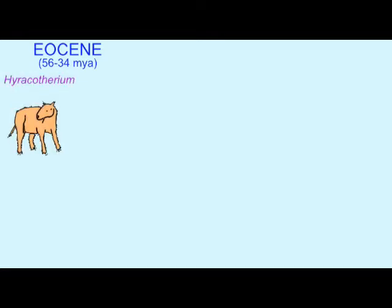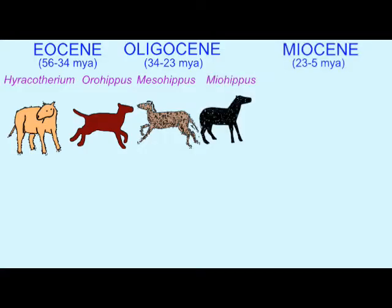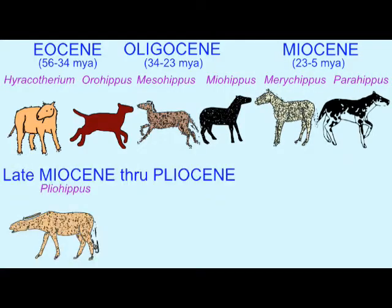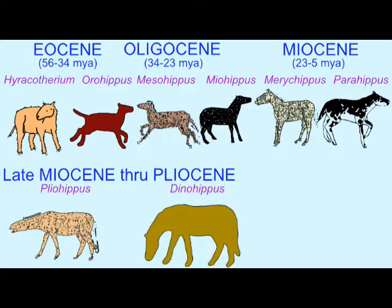There are different paces at which evolutionary change can occur. Gradualism depicts scenarios in which evolutionary change occurs slowly through gradual transitions.